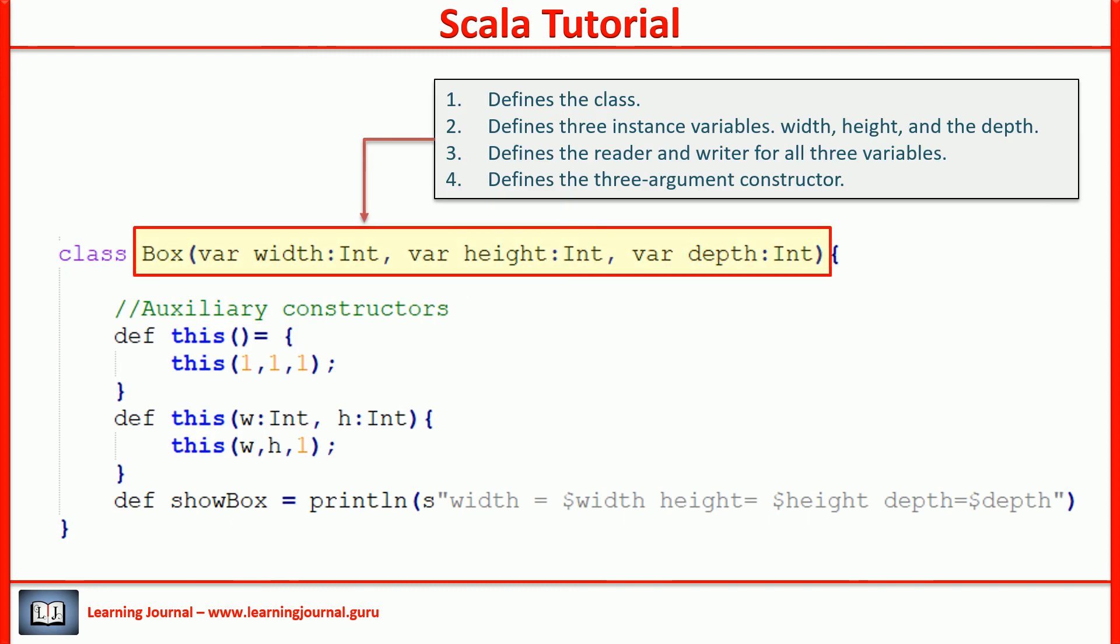The first line defines the class and the primary constructor. The primary constructor takes width, height and the depth of the box. That first line does a lot of things for us. It defines the class. It also defines three instance variables: width, height and depth. It goes further and defines the reader and writer for all three variables. That same line also defines the three argument constructor. That's why we always make the all argument constructor as primary. If you make the no argument constructor as primary, you won't get item 2 and 3 from this list.